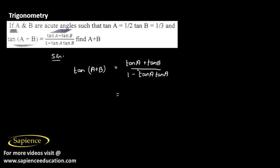So now we can substitute the values of tan A and tan B which is given to us. So 1/2 plus 1/3 divided by 1 minus 1/2 into 1/3.